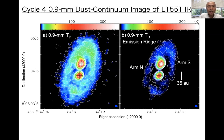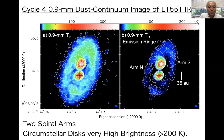We suggest the circumbinary disk consists of two spiral arms. This color scale shows the brightness temperature of the 0.9 mm dust continuum emission. At the peak of the circumbinary disk, the brightness temperature exceeds 200 Kelvin, which is pretty high — so the circumbinary disk temperature is very high.